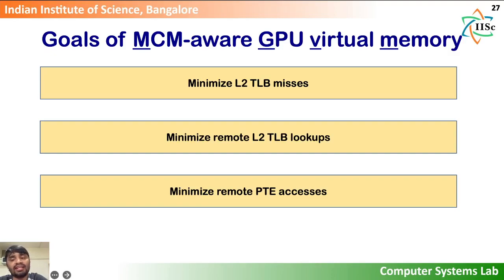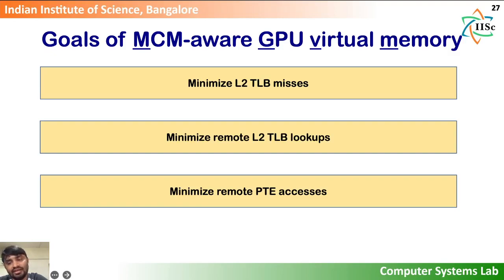We present detailed quantitative analysis of each of these factors in the paper. At a high level, we find that remote page walks account for around 50% of the overheads of address translation in shared design. Further, we find that it is important to utilize the aggregate capacity of the L2TLB slices across all chiplets. Our solution, MCM-Aware GPU Virtual Memory or MGVM for short, aims to reduce the impact of non-uniformity on address translation. Based on our observations, we defined three goals.